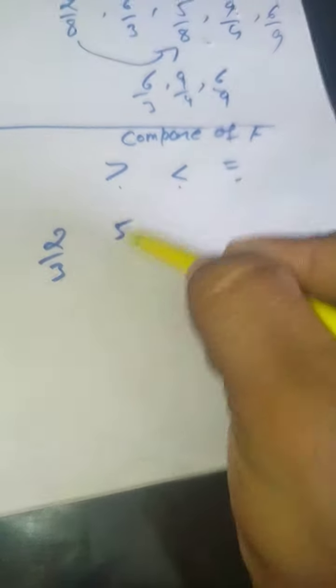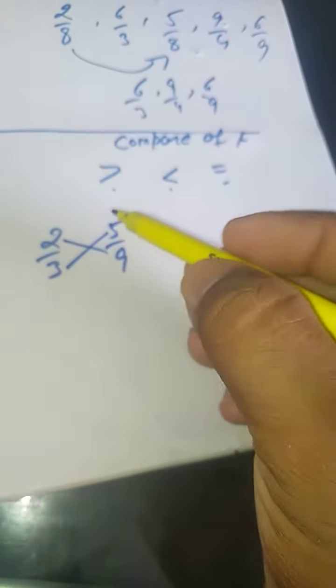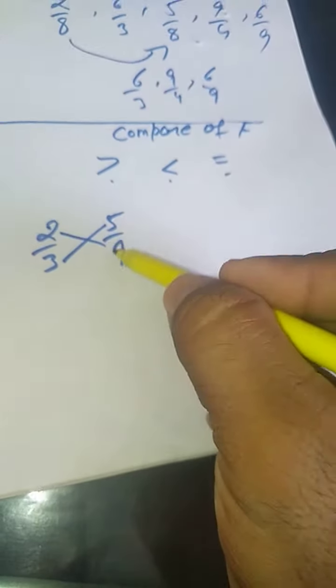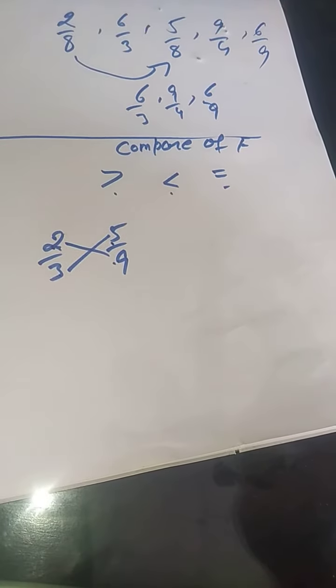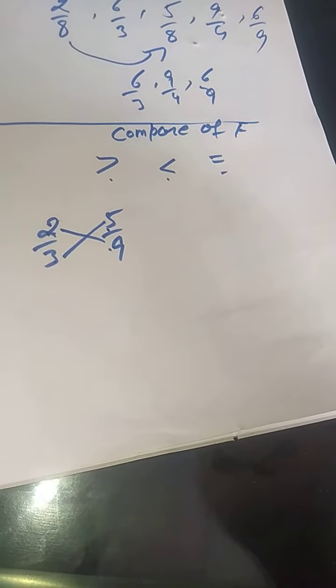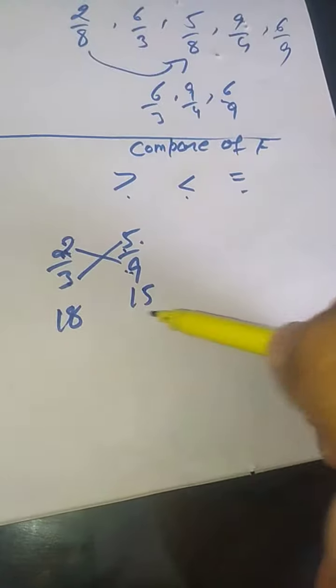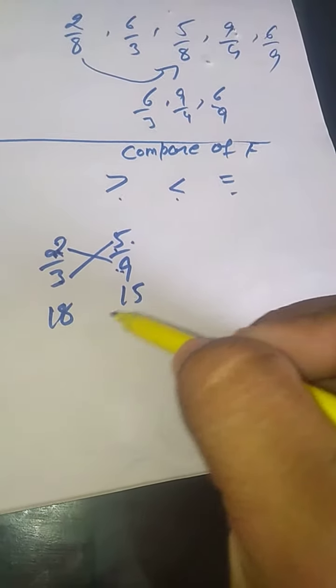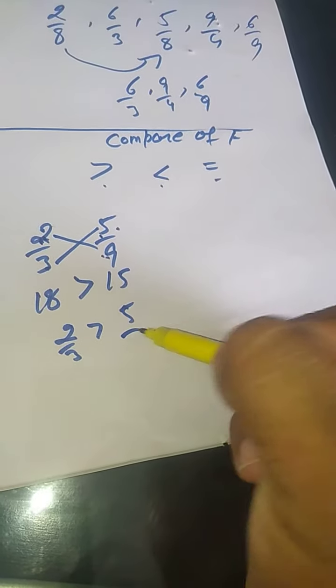Example: 2/3 and 5/9. जब भी compare करेंगे, cross multiply करना है — 2 की 9 से और 3 की 5 से। 2 × 9 = 18 इस side लिखेंगे, 3 × 5 = 15 उस side। 18 is greater than 15, so 2/3 is greater than 5/9.